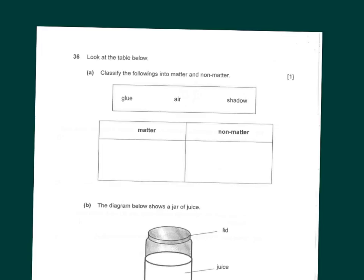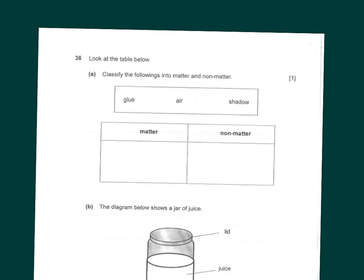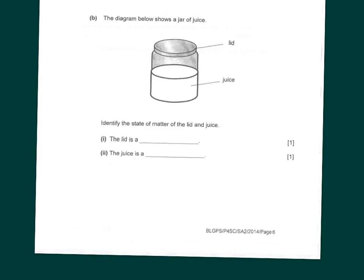Question 36: classify the following things into matter and non-matter. Matter is anything that has mass. Glue is matter, air is also matter, and shadow is non-matter. For part B, identify the state of matter of a gel of juice. When 'state of matter' is asked, you can only say solid, liquid, or gas — these are the three states of matter.